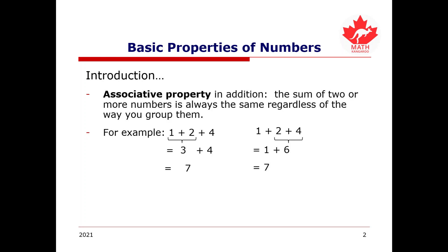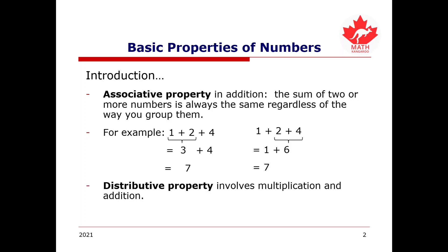Our last property is the distributive property, which involves multiplication and addition. For example, if we have 2 brackets 3 plus 5 — you will learn sometime in the future that brackets in math means multiplication — we can use the distributive property to expand the statement into 2 times 3 plus 2 times 5, which will give you 16. Let's get into some examples to better understand how these properties work in questions.